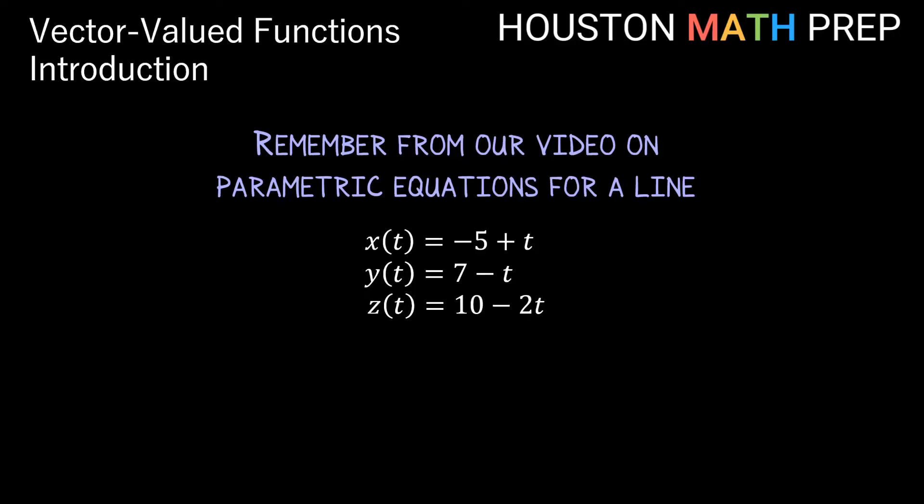If you recall from working with parametric equations in 3D space, these equations for x, y, and z written in terms of a parameter t like this represent a line in 3D space. In our Calculus 3 video series we looked at how these parametric equations tell us both a point that the line goes through and a vector in the direction of that line.